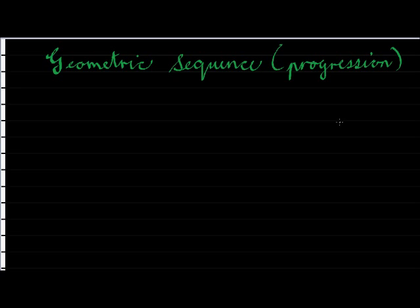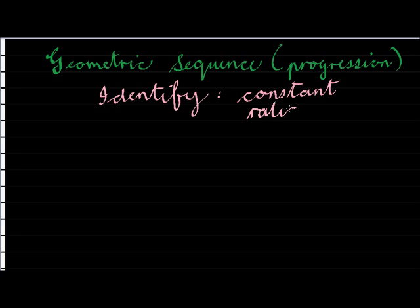How do I identify it and what is the general term? How do I identify a geometric sequence? The geometric sequence has got a constant ratio. Now it's not going to make much sense with just me saying the word, so let me give you an example.